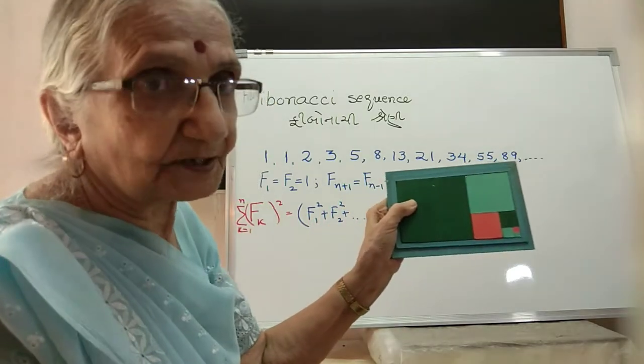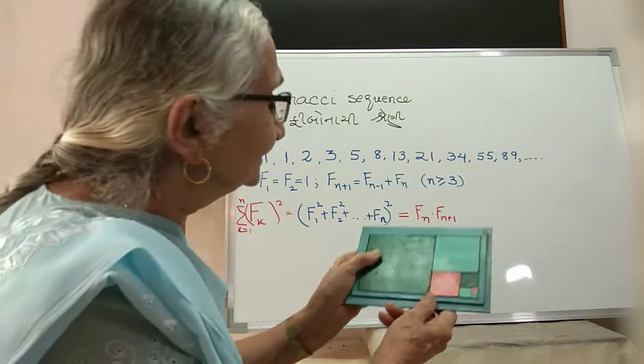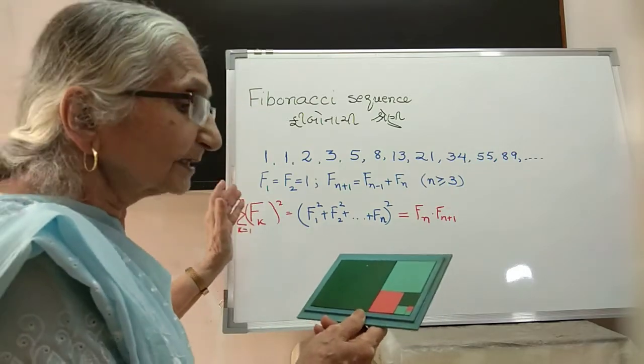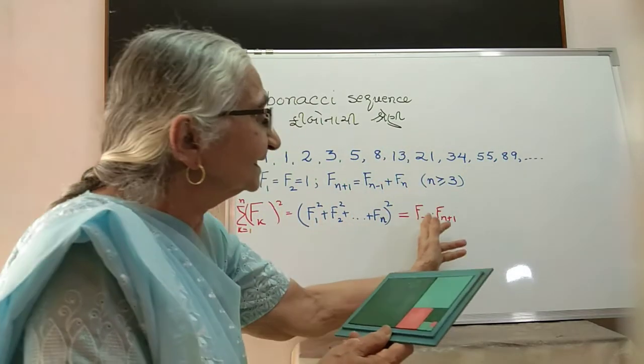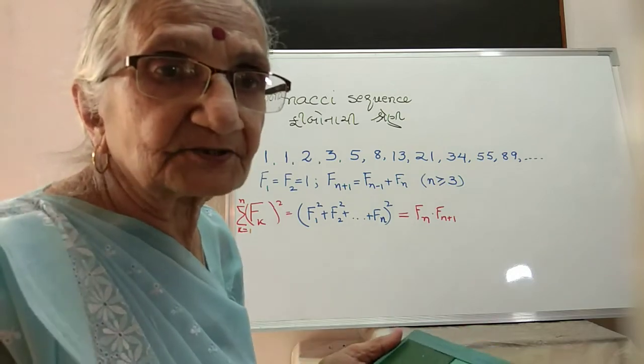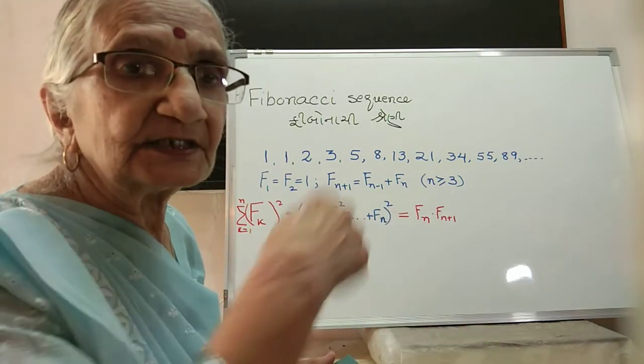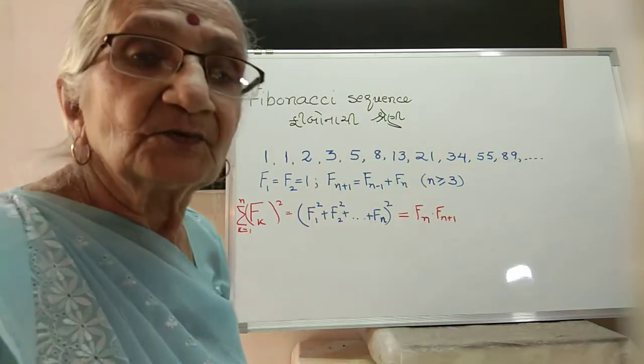So this was F_n, this is F_(n+1), and that is exactly what we want. So that is how we see that the sum of the squares of the Fibonacci numbers can be given simply as a product of the last one into the next one. Thank you.